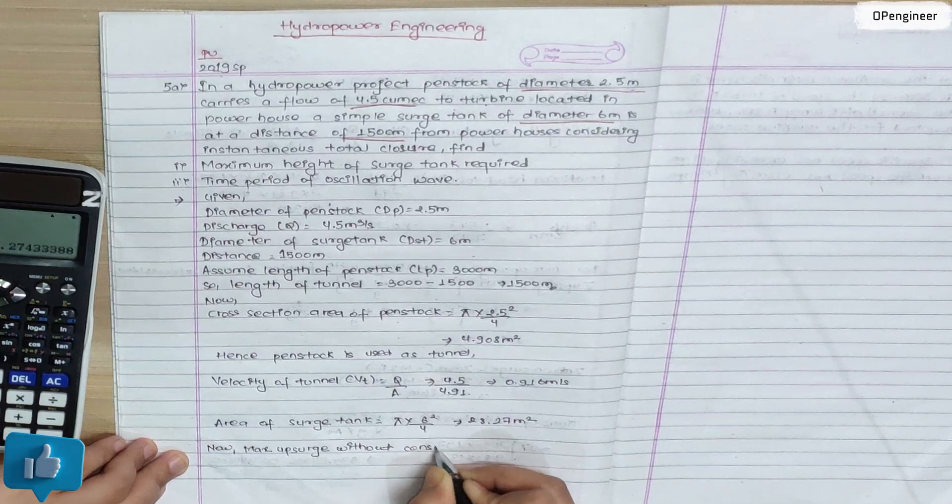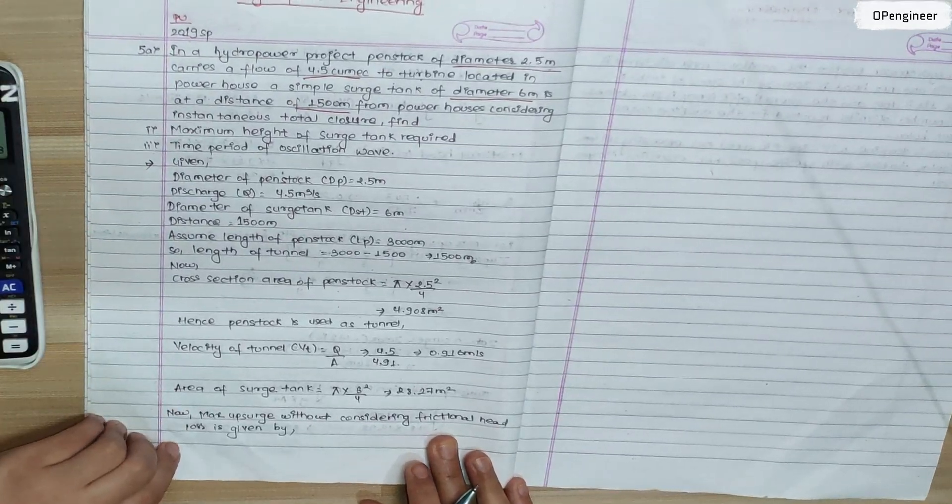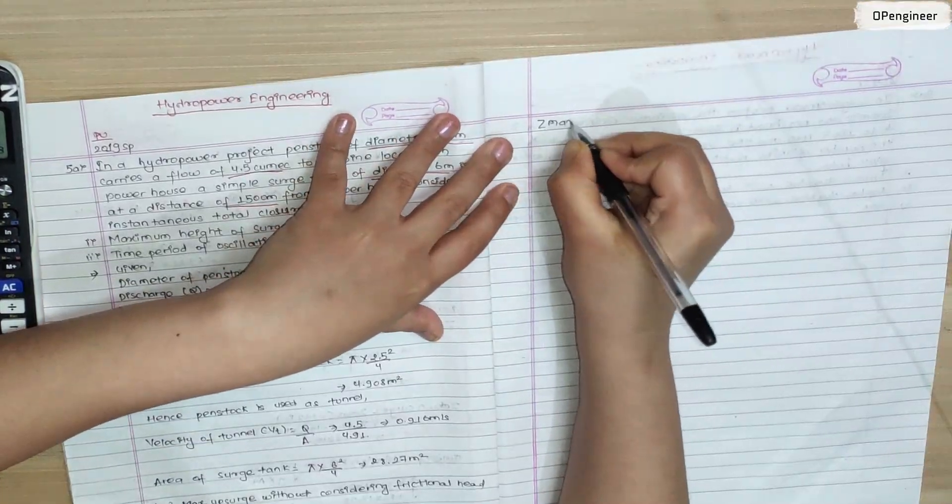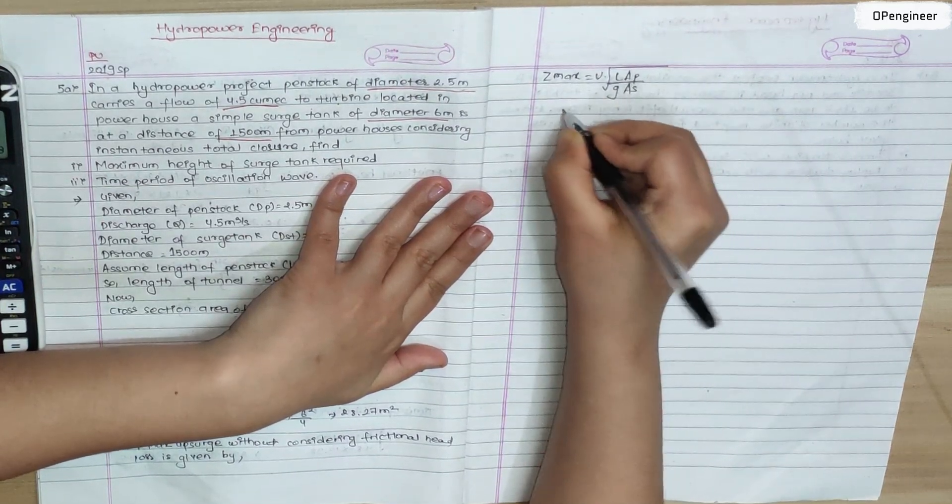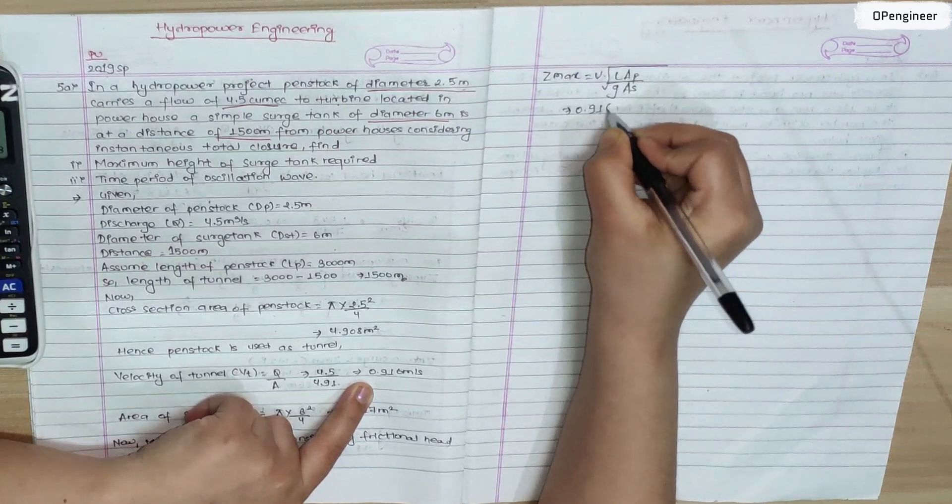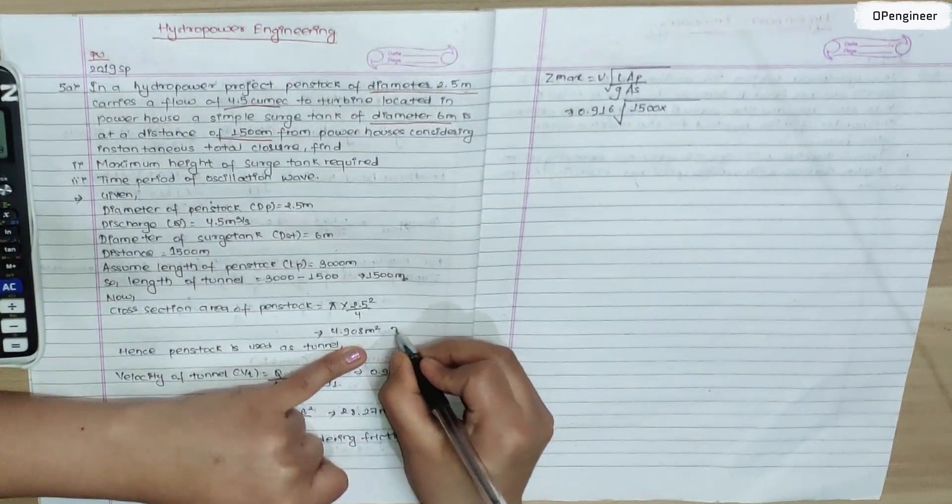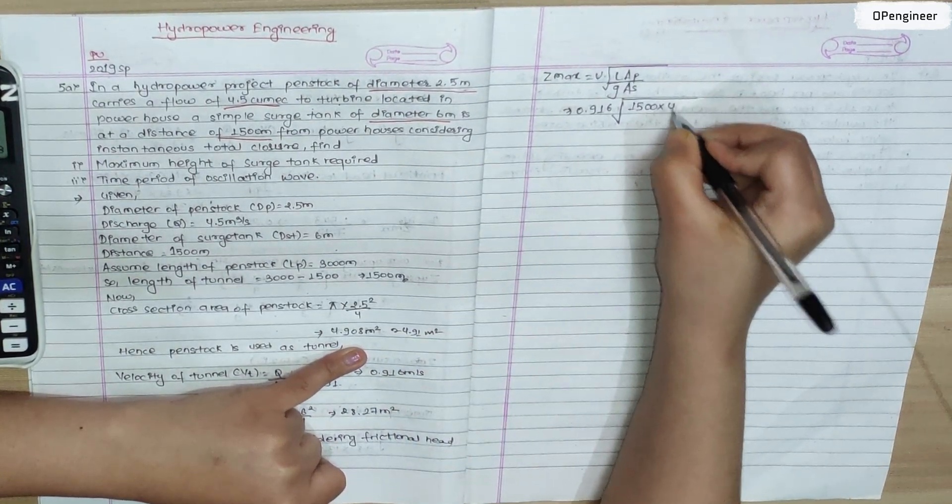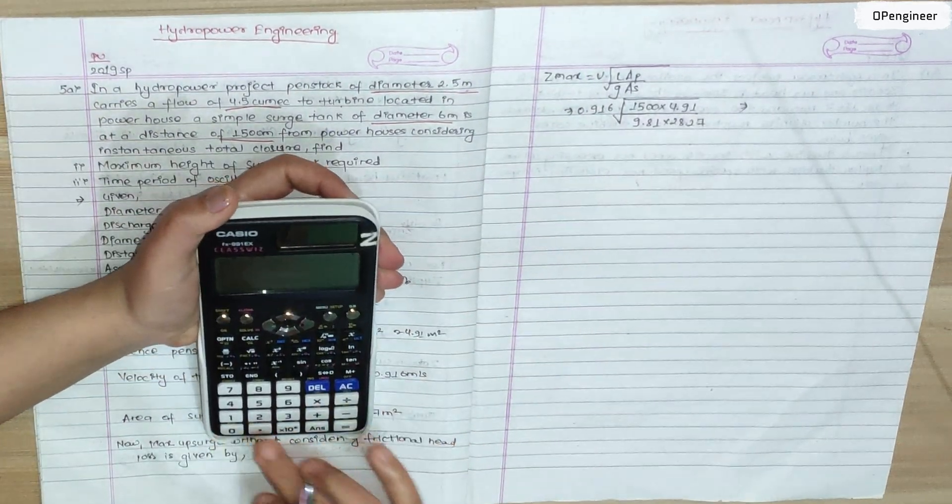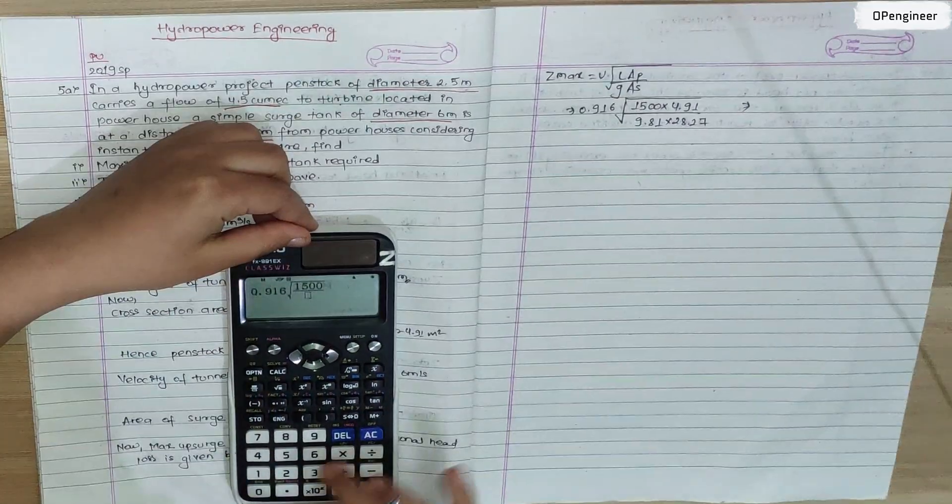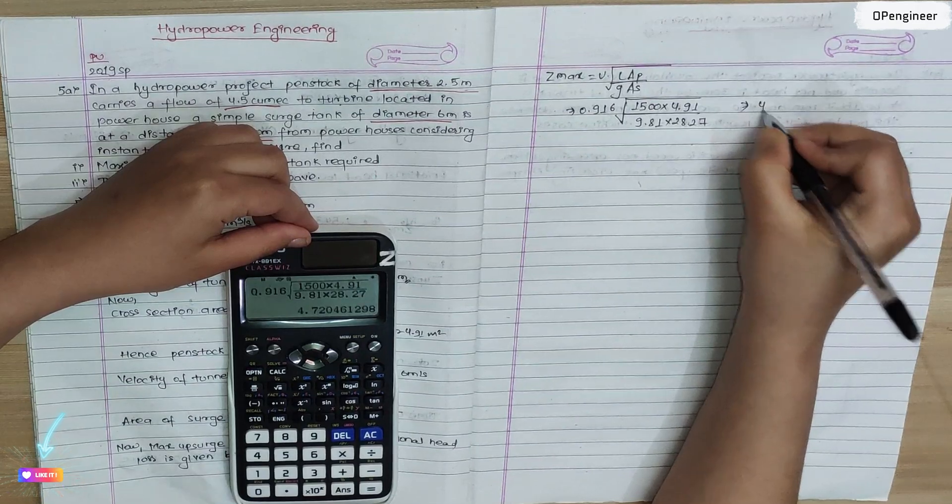Now maximum height of surge without considering friction head loss is given by: maximum height Z max equals to velocity root over length times area penstock by g into area of surge tank. So velocity is 0.916, length is 1500, area penstock is 4.91 by g is 9.81, area of surge tank is 28.27. So 0.916 root over 1500 into 4.91 by 9.81 into 28.27, you calculate the height is 4.72 meter.